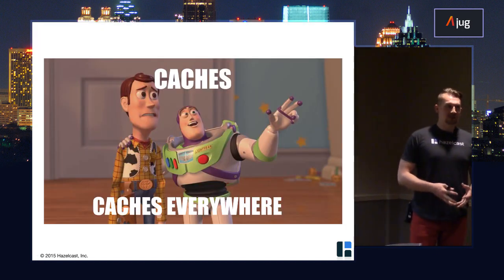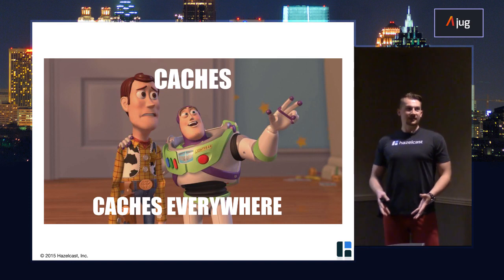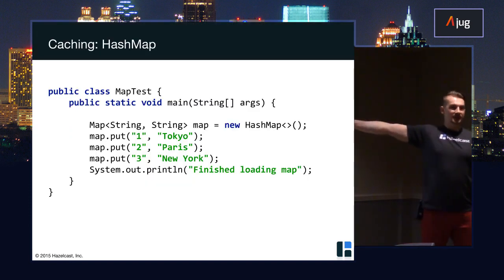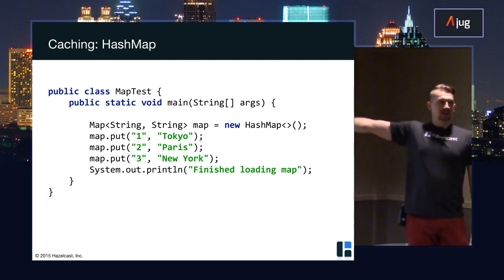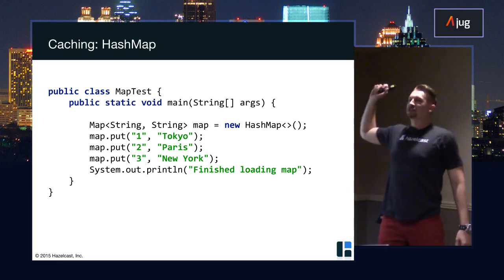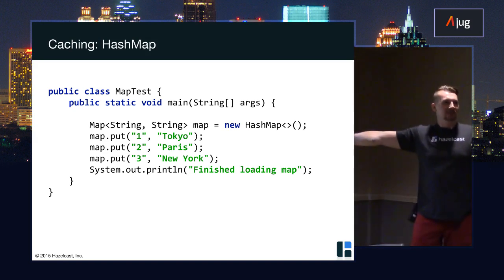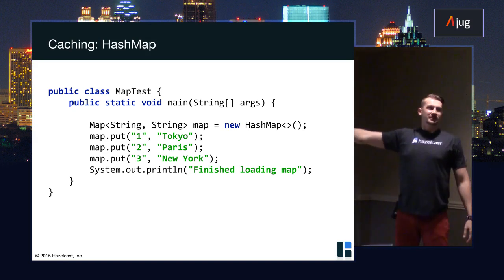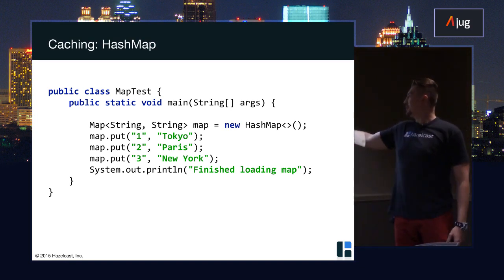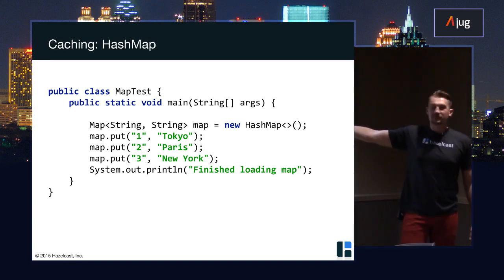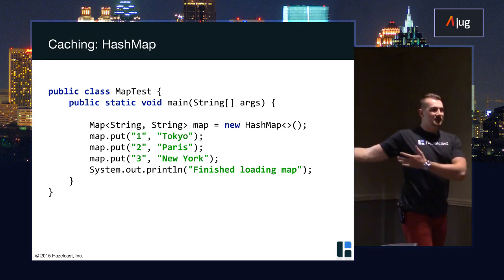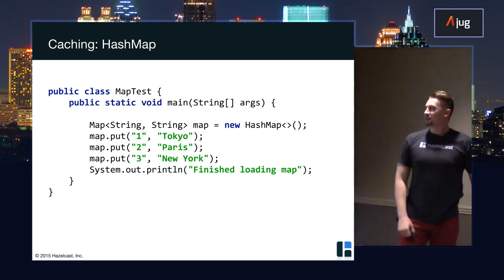And if you think about caching, you will see caching is everywhere. So for example, what is this? Who can tell me what is this? It's in-memory, no-SQL, key-value storage, also known as a hash map. It's in-memory because it runs inside the JVM. Key-value storage - you store a key and value. And it's no-SQL, it doesn't use any SQL.